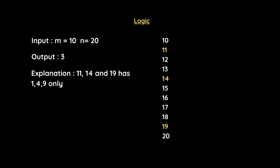We will not consider any number having a digit other than 1, 4, and 9. For 11, the digits are 1 and 1, so we include it. But 12, 13, 15, 16, 17, 18, and 20 are excluded. We only include 11, 14, and 19, as they have digits 1, 4, and 9 only.